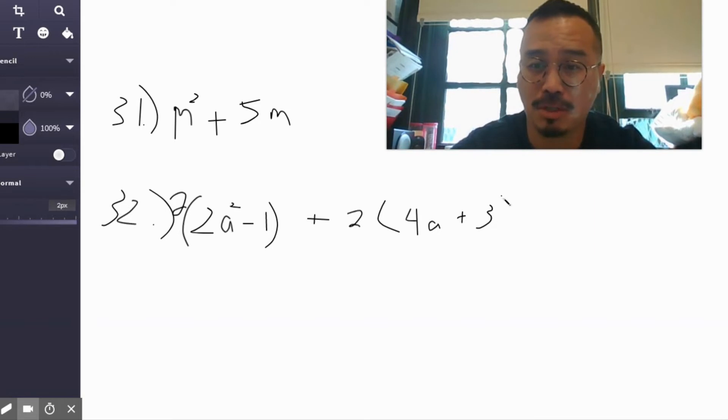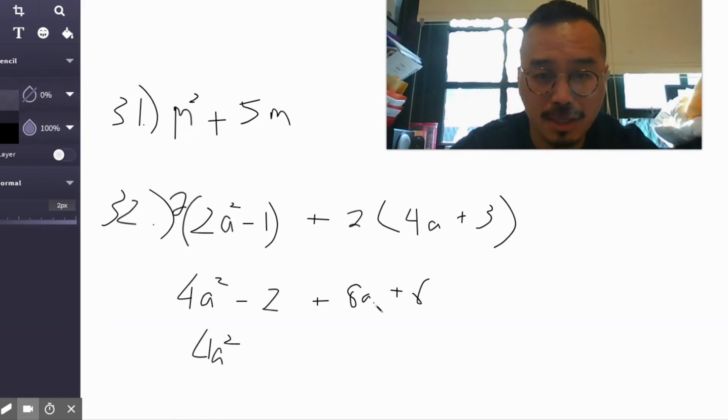Minus 2 plus 2, that's 8a plus 6. Combine like terms, right? Now let's see. Not in the same family, so that's just 4a squared plus 8a. And then you got the 6 minus 2, that's positive 4.